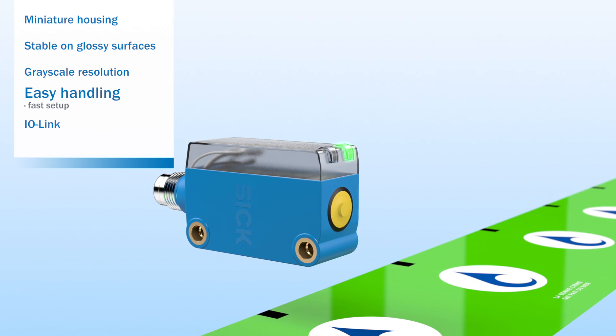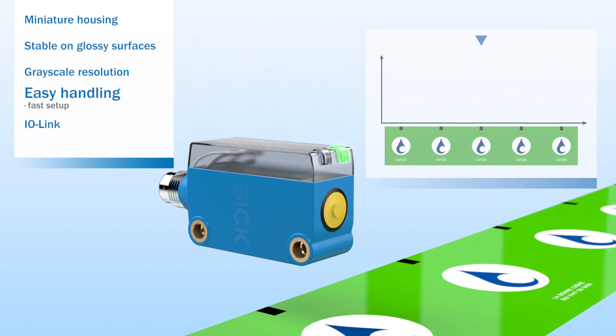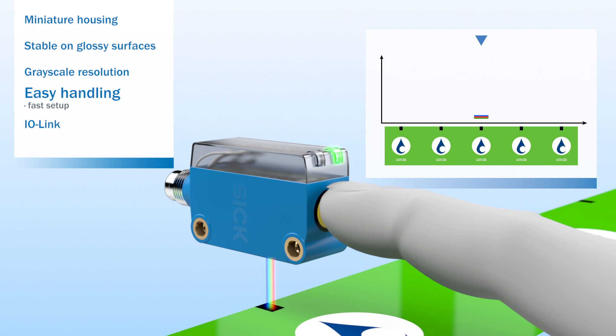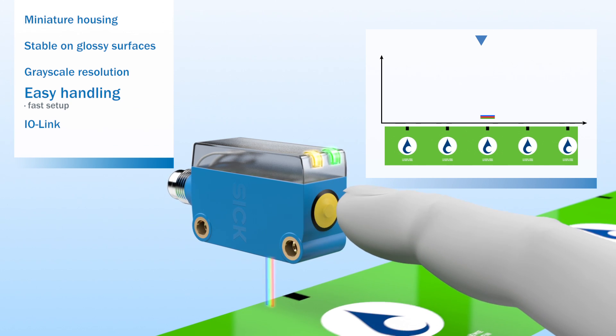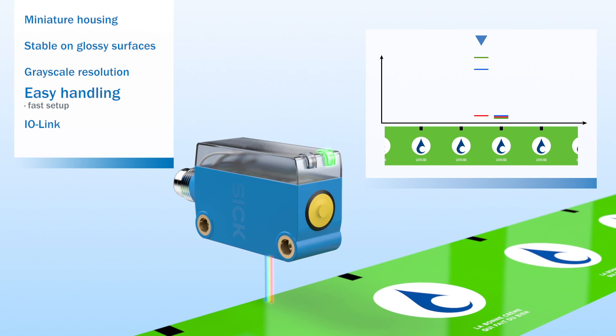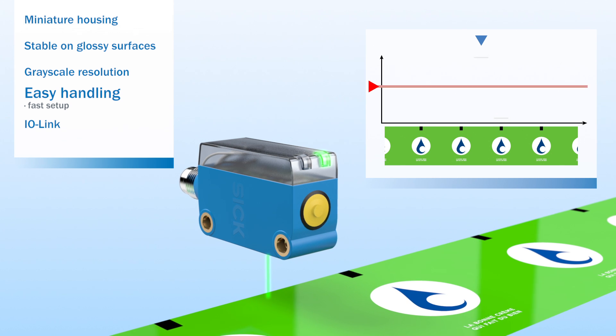The operating concept of the KTM is straightforward and intuitive. The two-point teach-in method captures the three-color technology mark and background and automatically selects the LED light color which delivers maximum contrast. The optimum switching threshold is determined so work can continue.